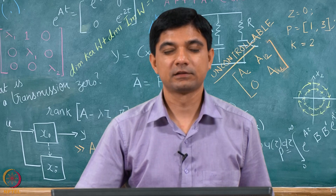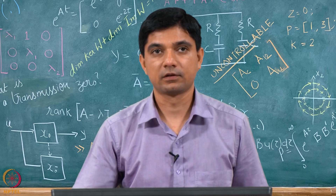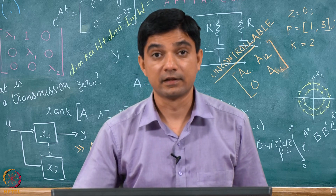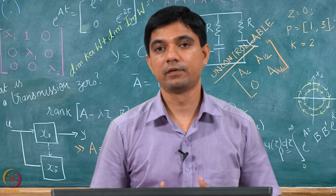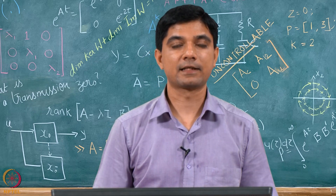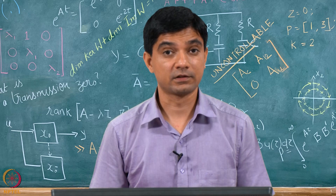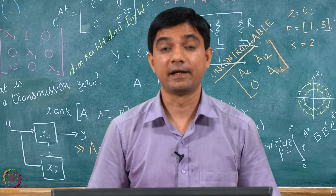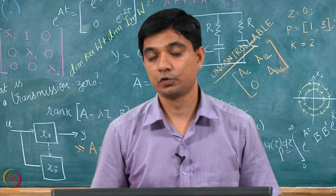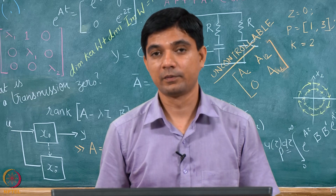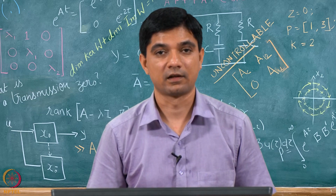Welcome to lecture 6 on week 7 of the course on linear systems theory. This lecture will discuss some important aspects of what happens if the system is not controllable and how to identify, post the controllability rank conditions, what the possible modes are that are uncontrollable.